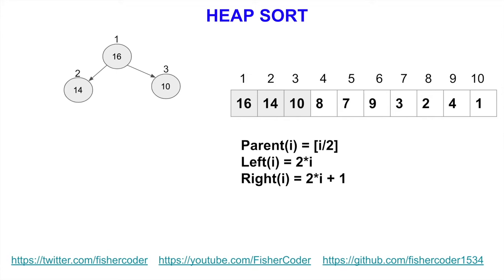On most computers, this can be achieved efficiently by shifting the binary representation of i. Shifting i to the left by one bit gives the left child, shifting left by one and adding 1 gives the right child, and shifting the child index to the right by one position gives its parent index. This makes things very efficient on most computers.